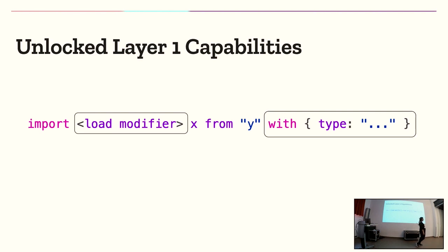Prior to these two proposals, these two boxes didn't exist. Import assertion introduced this box — we spent a very long time on this syntax. It used to be called assert; we're trying to rename it to 'with'. It took years to get to this point. On the left-hand side, we have new module syntax, which we are also still discussing. The load modifier — the name is going to be 'module', but if you're familiar with JavaScript: what have you been loading this whole time if you haven't been loading modules? So there's still discussion about what the syntax-level design will look like.